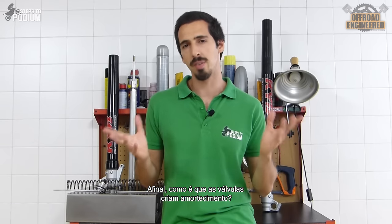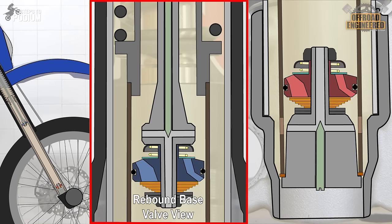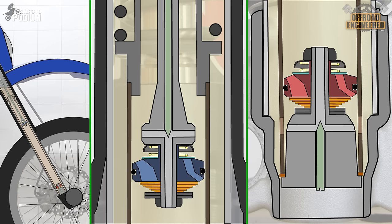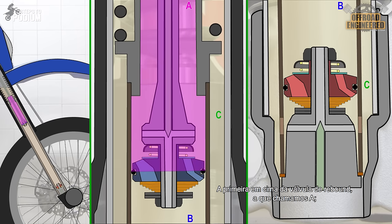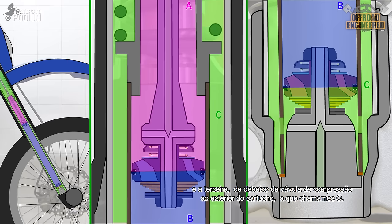So how exactly do the valves create damping? I'll consider three different chambers, one above the rebound base valve called A, one between the rebound and compression base valves called B, and another one from under the compression base valve to the outside of the cartridge, which I'll call C.